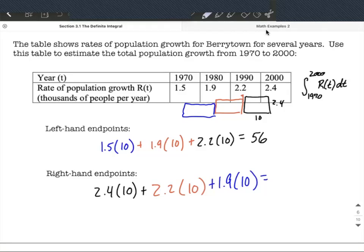This works out to be 65. So we got an underestimation using our left-hand endpoints on this one of 56. We got an overestimation using the right-hand endpoints of 65. So the best estimate of what the total population was is probably somewhere in between.